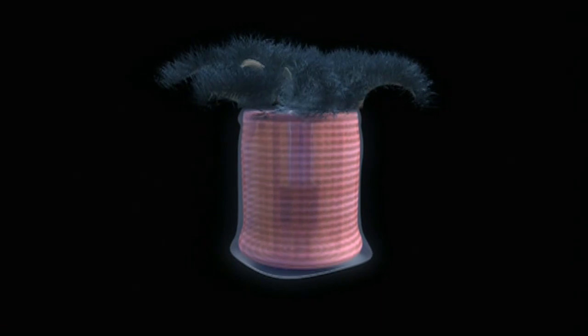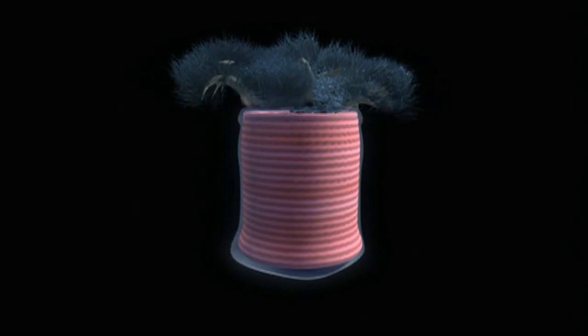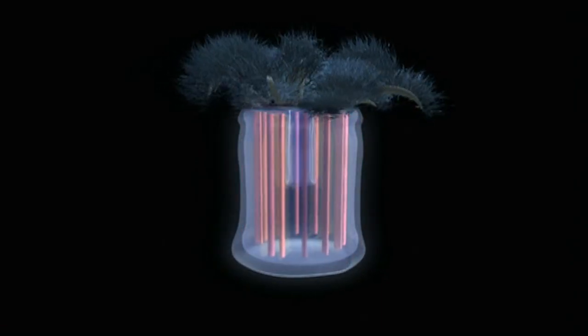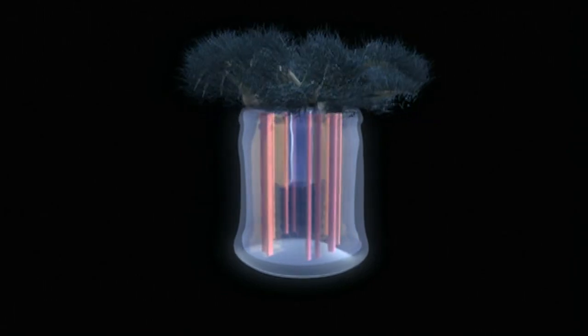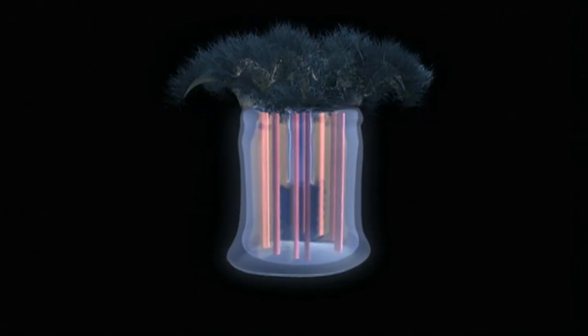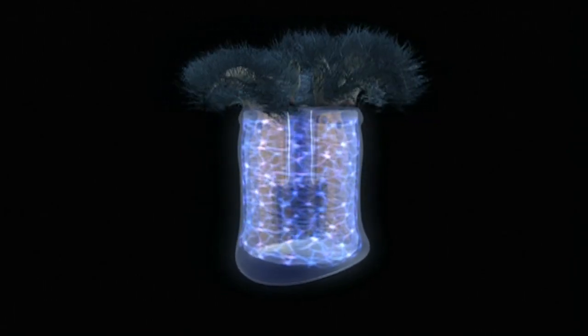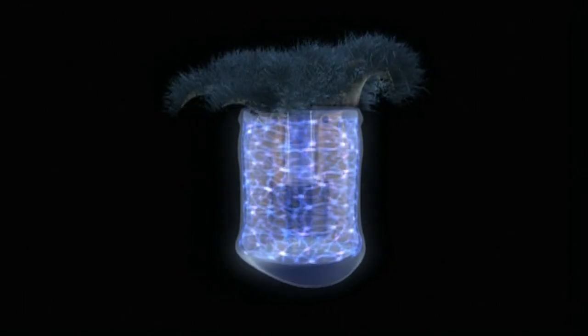With two sets of muscles, cnidarians can bend in any direction. To control their muscles, they rely on another cnidarian invention, special cells called nerves.